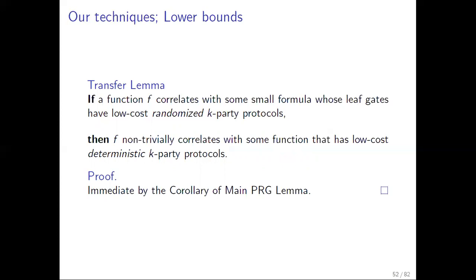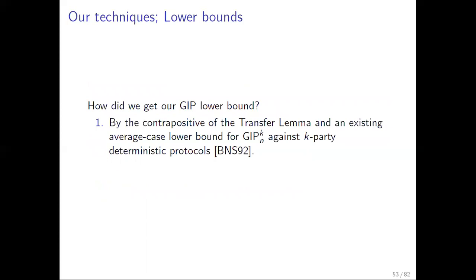For our PRG, we use this corollary and invoke from the literature PRGs that fool function classes G of low deterministic communication complexity. For lower bounds, we use a transfer lemma — an immediate corollary of the main PRG lemma — which says that if a function f correlates with a small formula whose leaf gates have low-cost randomized k-party protocols, then f non-trivially correlates with functions that have low-cost deterministic k-party protocols. To get a lower bound, we use the contrapositive and plug in an existing average-case lower bound for generalized inner product, due to Babai, Nisan, and Szegedy.